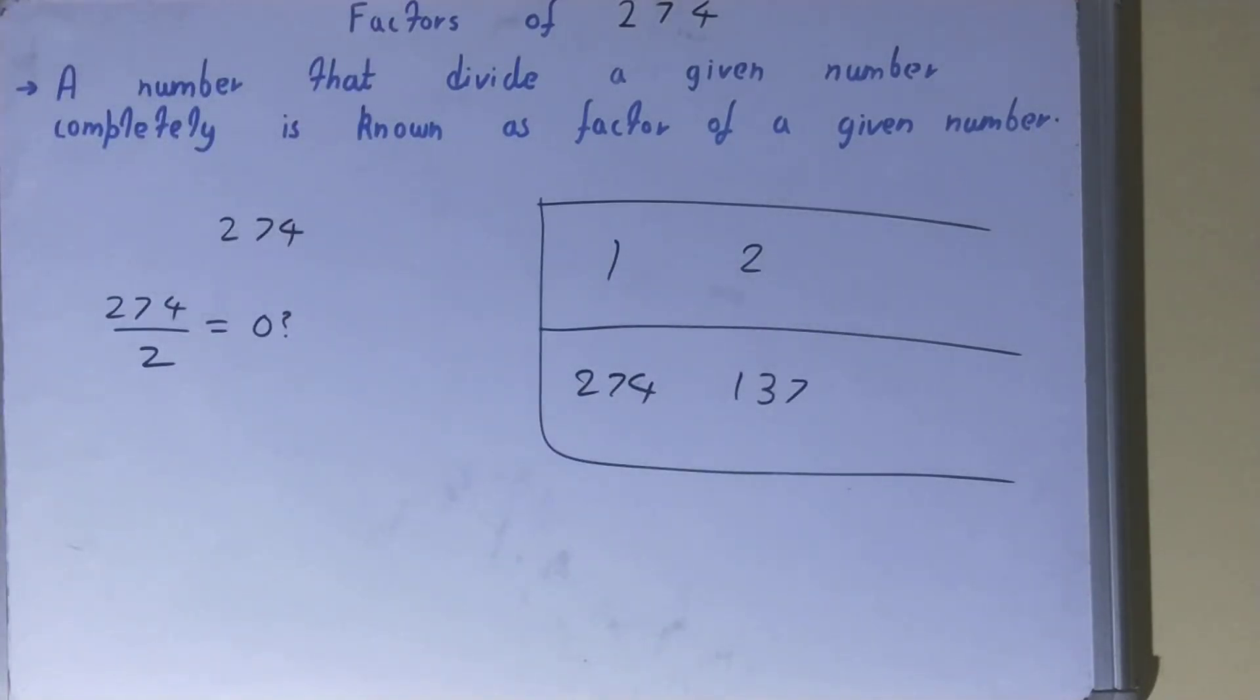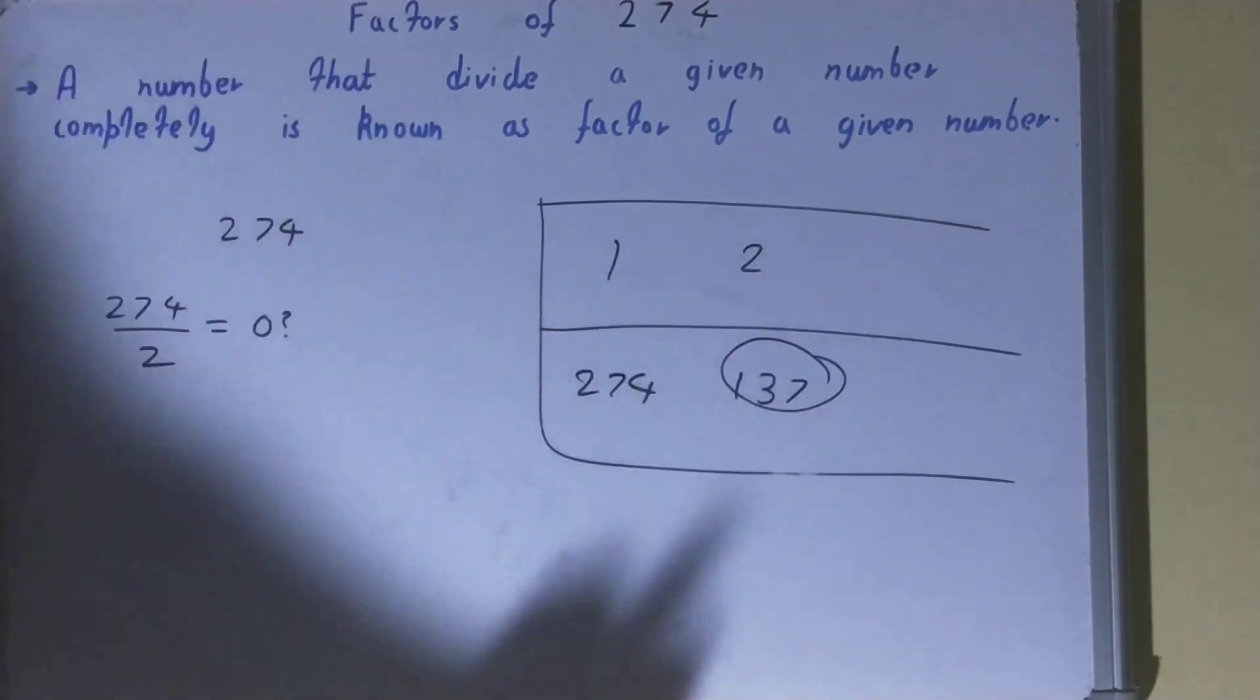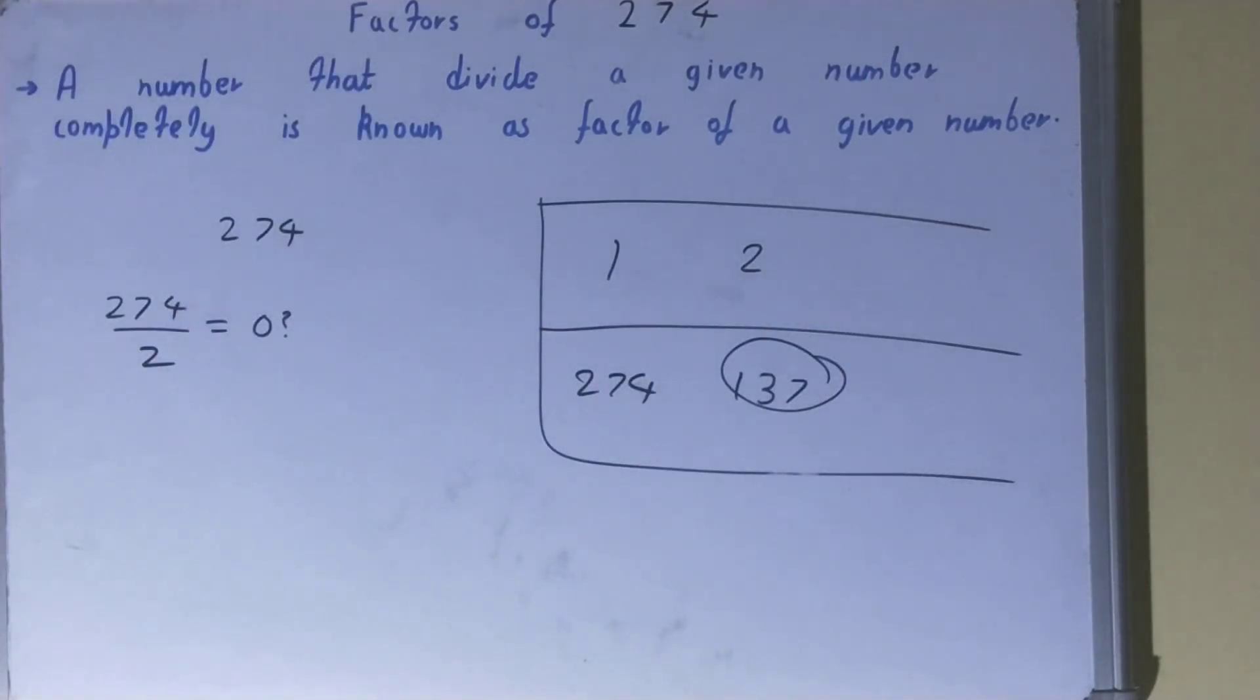Okay, so two is a factor and 137 will also be the factor. Now one thing you need to see very carefully over here, that in the second row in the last row you have got a prime number in the form of 137. So whenever you spot a prime number in the second row in the last row, your work is done then and there only.